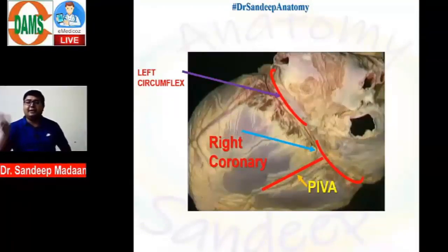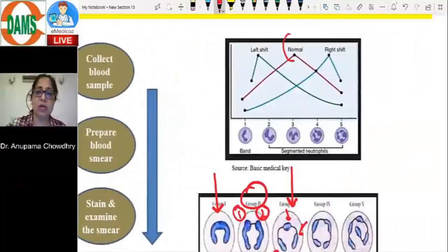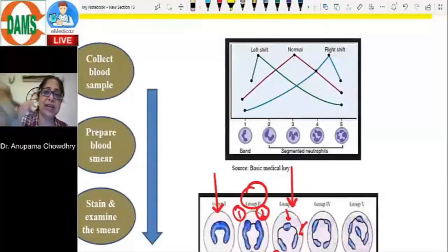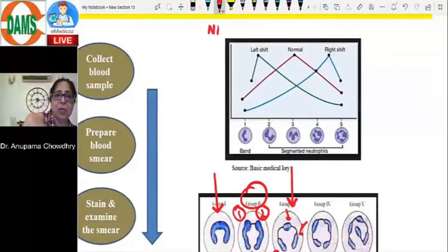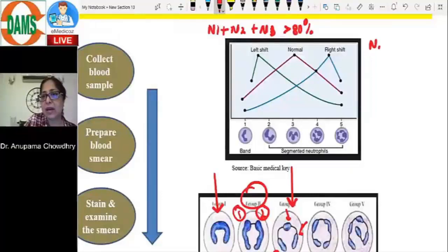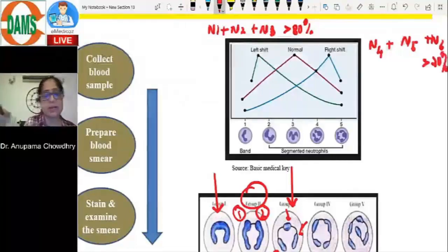Normal is when n3 is maximum — this is normal, peaking at n3. Left shift is when n1 plus n2 plus n3 is more than 80%. Right shift is when n4 plus n5 plus n6 is more than 20%.